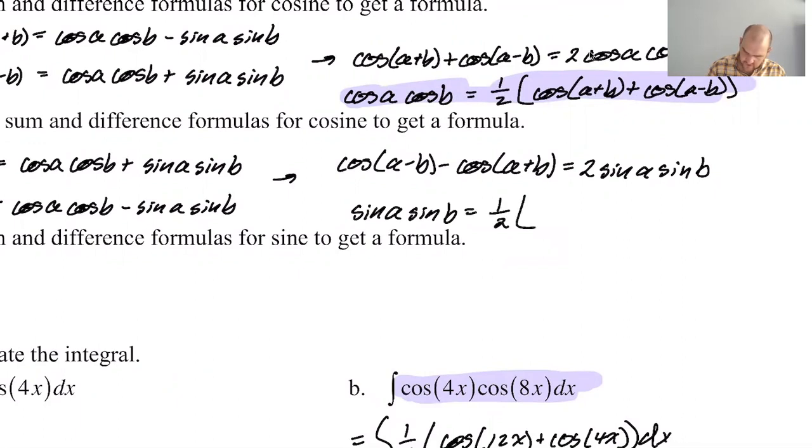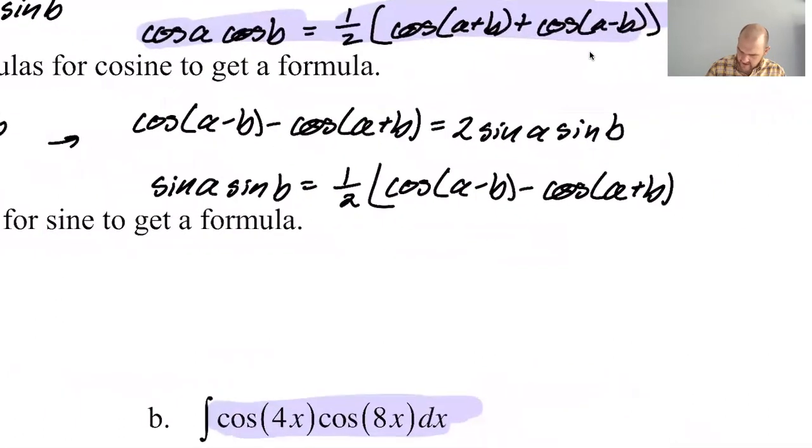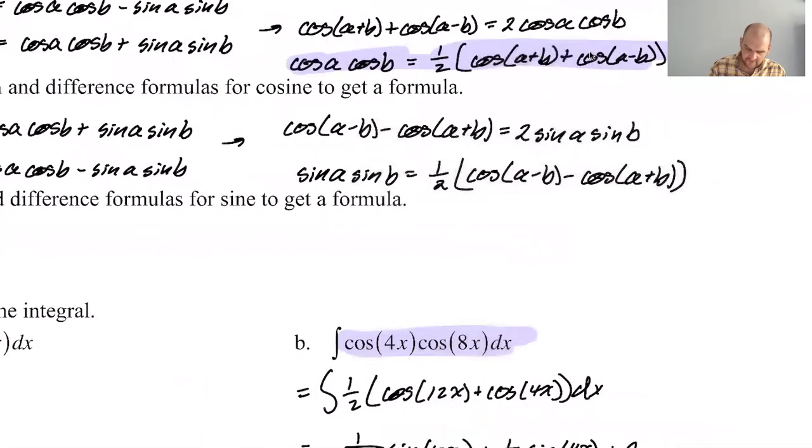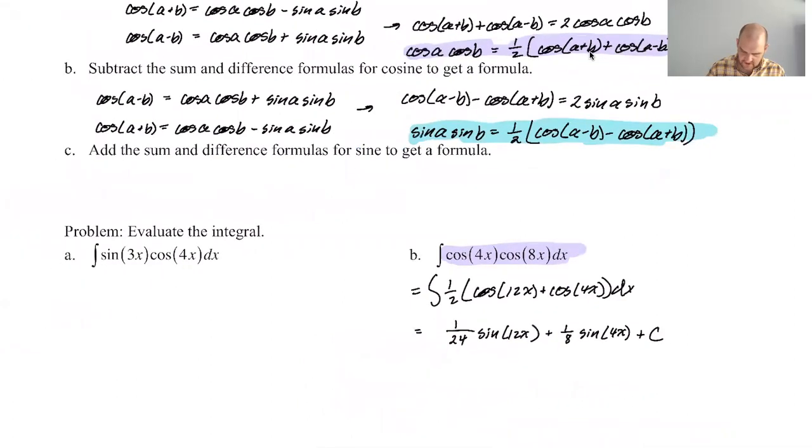So we know that sine a sine b is going to be one half. I'm going to copy paste just to speed things along, I like to save you about 10 seconds every once in a while. So this is the formula that we would use in the event that we had to integrate this, but we don't have to integrate that. That's not one of the problems.